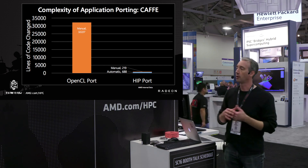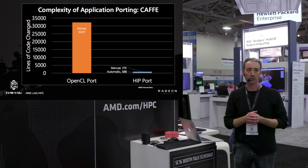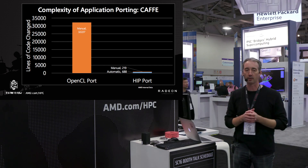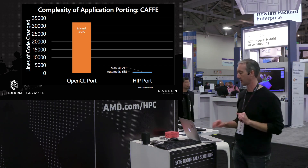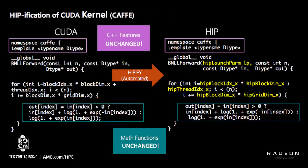This is the HIP port: less than 1,000 lines of code were changed, and most of those were done automatically by the tool. Our developer took about a week to clean things up. This slide shows an example of what the HIPify tool is doing — if you look at the things highlighted in yellow, that's what the HIP toolchain does.